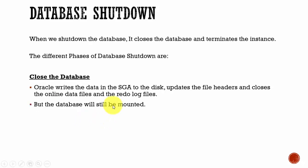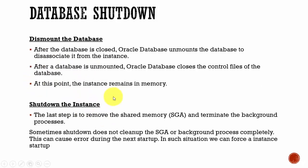This is what happens: it closes the database, then it dismounts the database, and then it shuts down the instance. Sometimes whenever we are shutting down the database, for whatever reason, the shared global area or the background processes may not shut down completely. So what happens whenever we start the database next time, we will get errors. As a DBA, we force the instance to start.